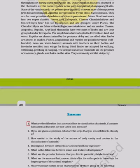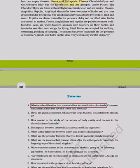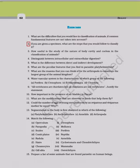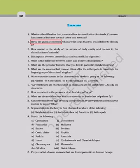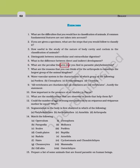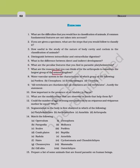Exercises: 1. What are the difficulties that arise in the classification of animals if common fundamental features are not taken into account? 2. If I have a new specimen, what are the steps that I follow to classify it? 3. How useful is the study of the nature of body cavity and coelom in the classification of animals? 4. Distinguish between intracellular and extracellular digestion. 5. What is the difference between direct and indirect development? 6. What are the peculiar features found in parasitic platyhelminthes? 7. What are the reasons that arthropods constitute the largest group of the animal kingdom?